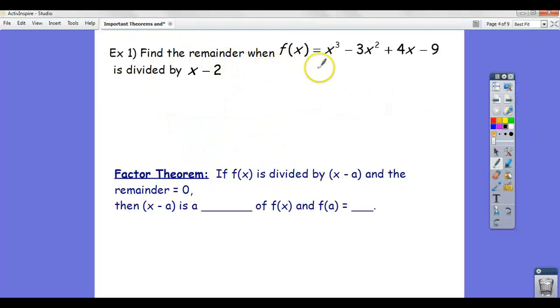Find the remainder when f of x is divided by x equals 2. So, there are two choices, but if we use the remainder theorem, you can just plug in the zero associated with x minus 2. So, the zero associated with that is 2. So, this is 2 cubed minus 3 times 2 squared,